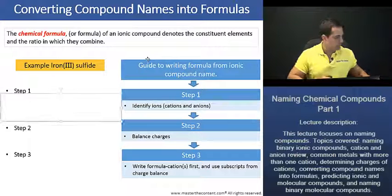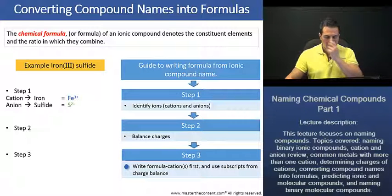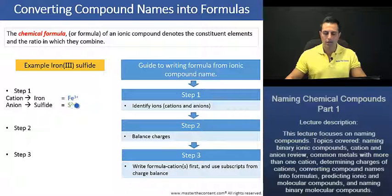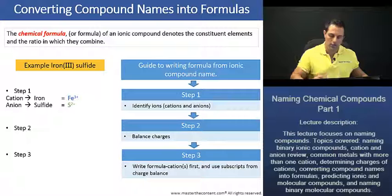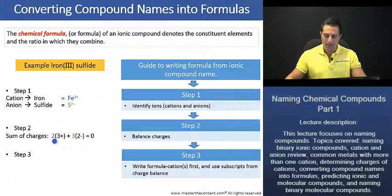Before we can write the formula, we need to balance the positive and the negative charges of the cation and anion. In order to obtain a sum of zero for the sum of the charges, if we write in our formula, we see that we're going to need two irons and we're going to need three sulfurs as such. And in doing so, the sum of our charges is balanced.